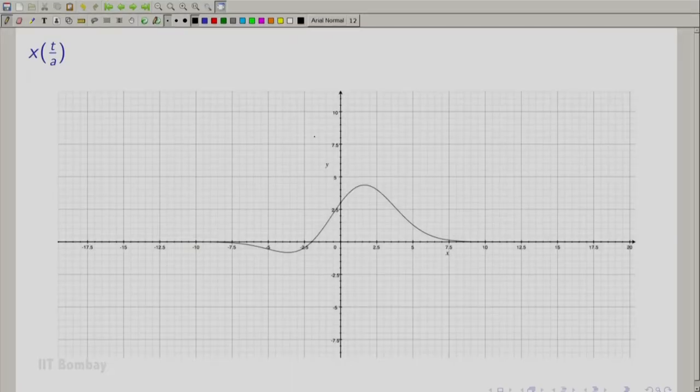So, now we move on to x(t/a). Again, a is greater than 1 and as expected the graph of the function has expanded and not compressed as was in the previous case.